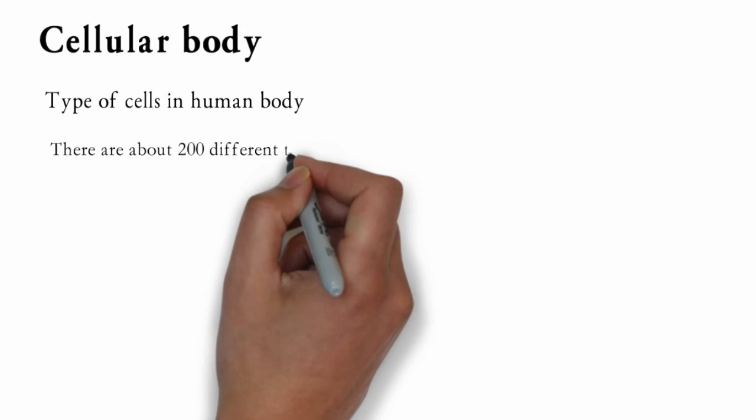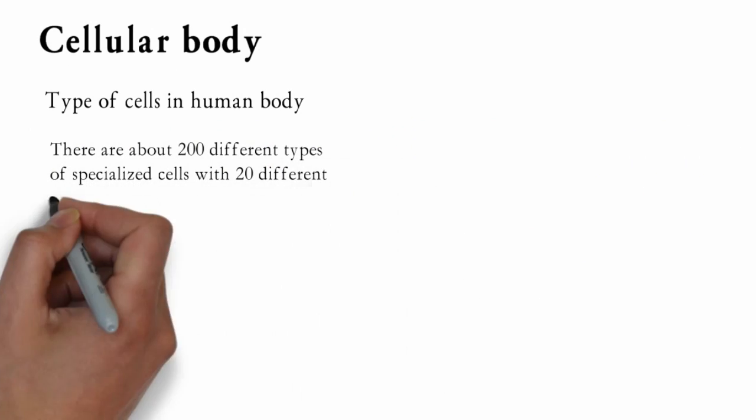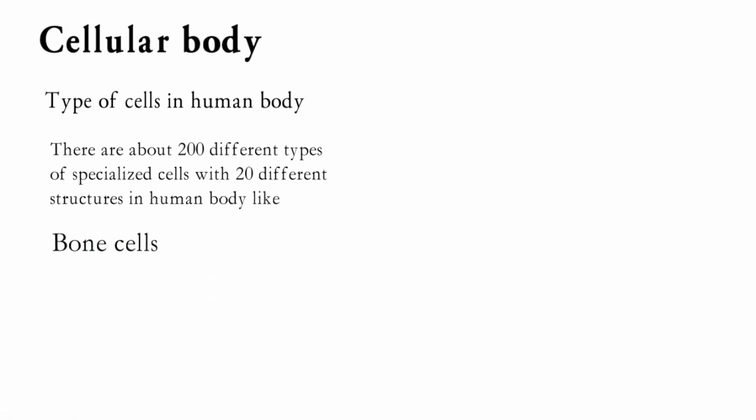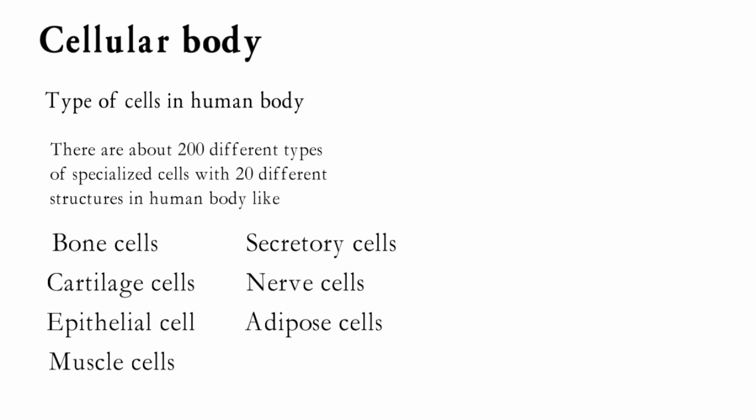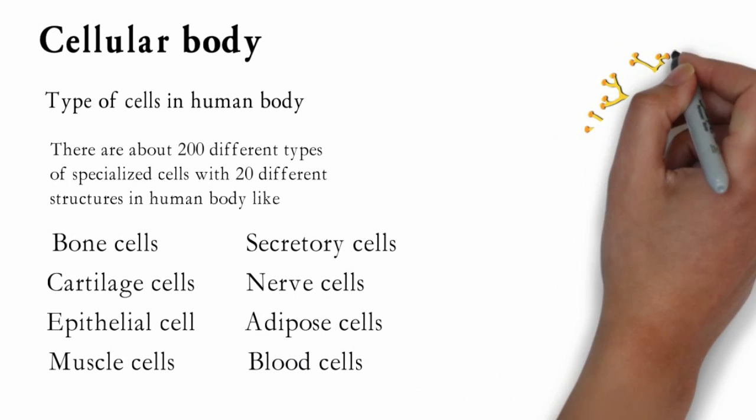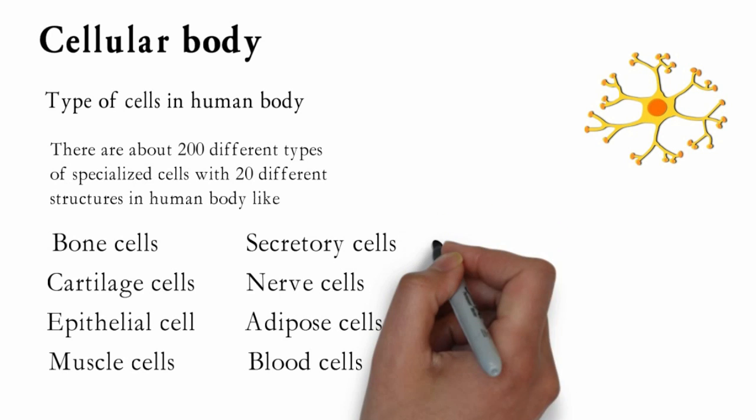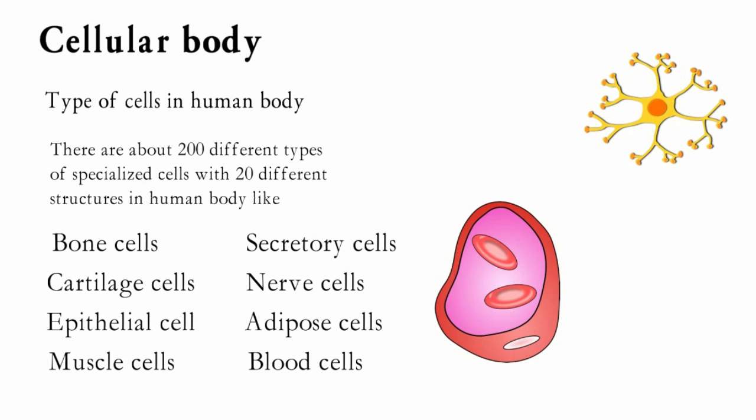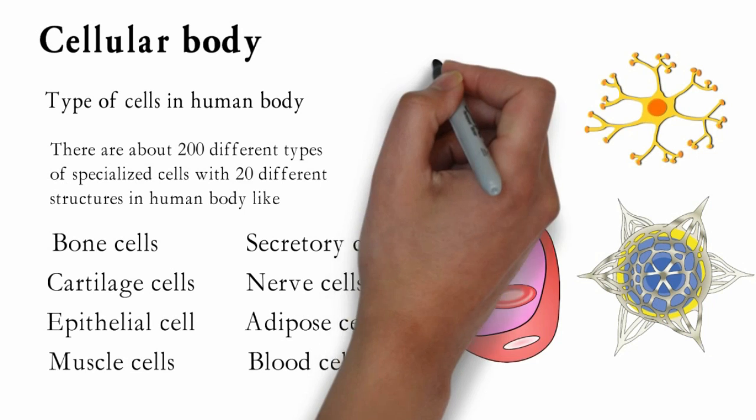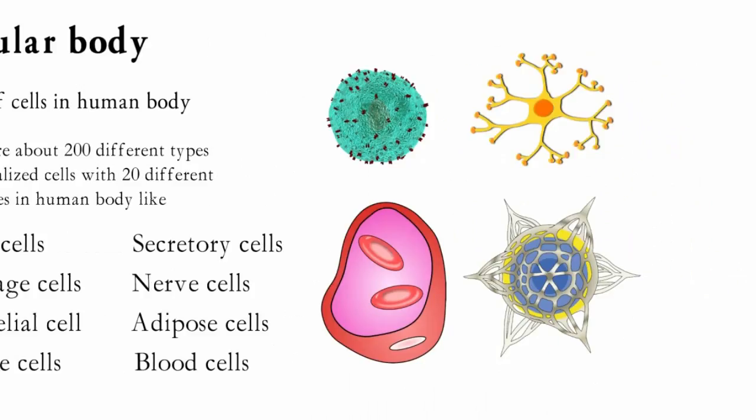There are about 200 different types of specialized cells with 20 different structures in human body like bone, cartilage, epithelial, muscle, secretory, nerve, adipose and blood cells. These cells perform different specialized functions like conduct electric impulses, connect cells and tissues, store materials like fat, produce enzymes and hormones, and support other cells.